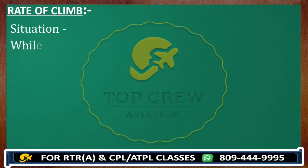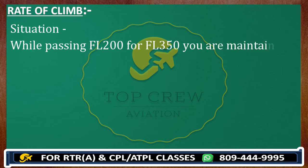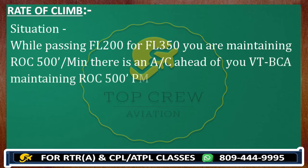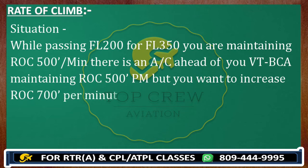For example, while passing flight level 200 for flight level 350, you are maintaining rate of climb 500 feet per minute. There is an aircraft ahead of you, call sign Victor Tango Bravo Charlie Alpha, also maintaining rate of climb 500 feet per minute. But you want to increase rate of climb to 700 feet per minute. Both aircraft are maintaining 500 feet, and the aircraft behind wants to increase rate of climb.